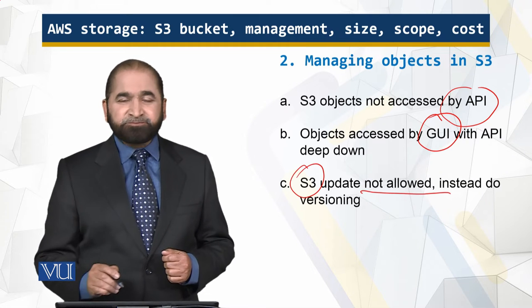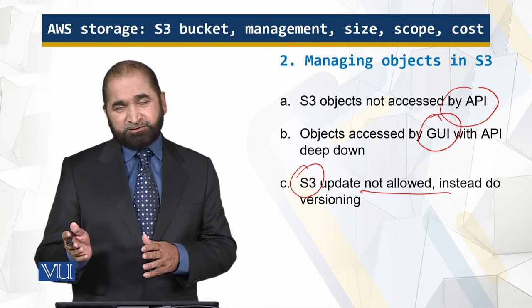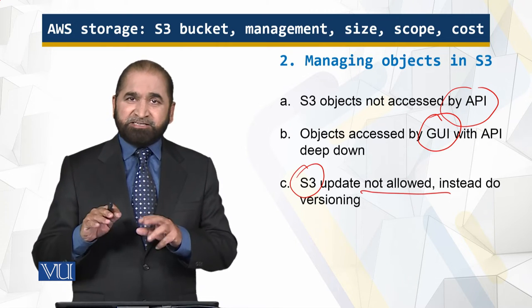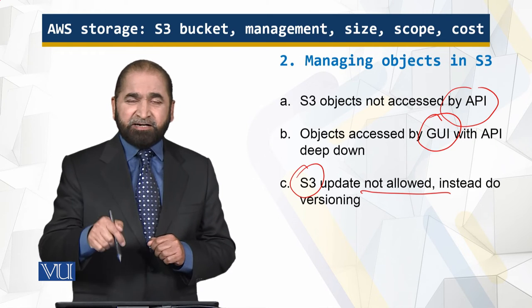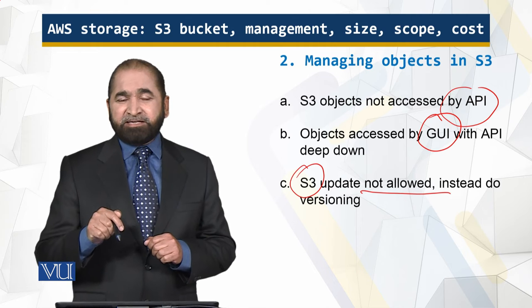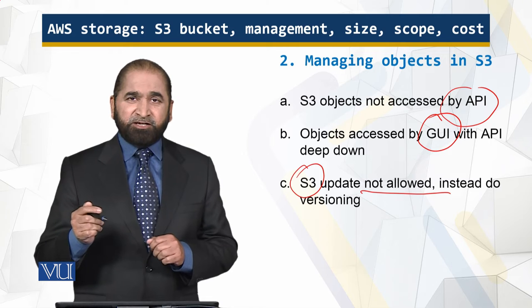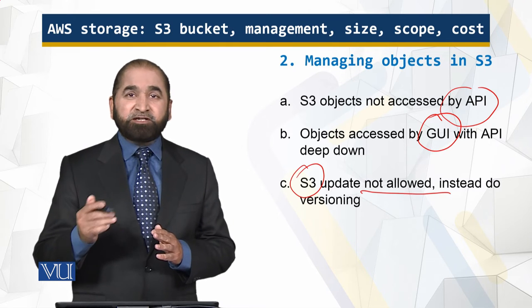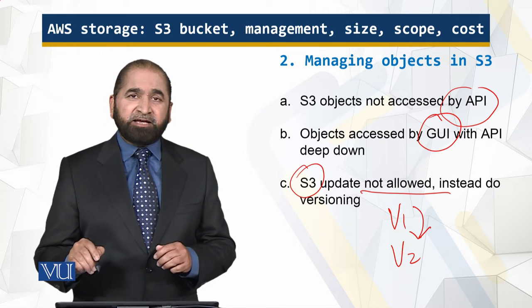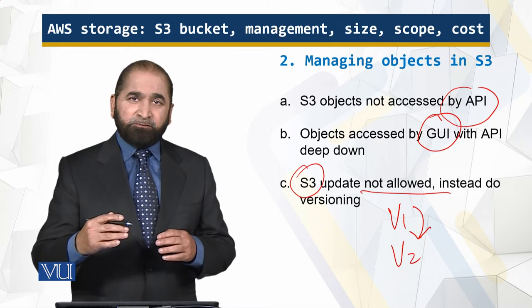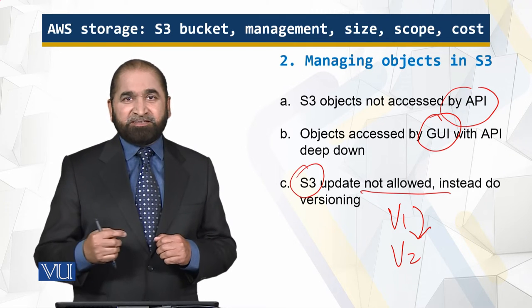S3 updates are not allowed — this is the main difference between storing on S3 and storing on your hard disk. On your hard disk, you can make changes directly in a file or database. But in the case of S3, that is not the case. You cannot modify it directly. What you do instead is make versions: V1, V2, and so on. You store V1, then V2, and you have multiple versions, and based on those versions you know which is the latest update.